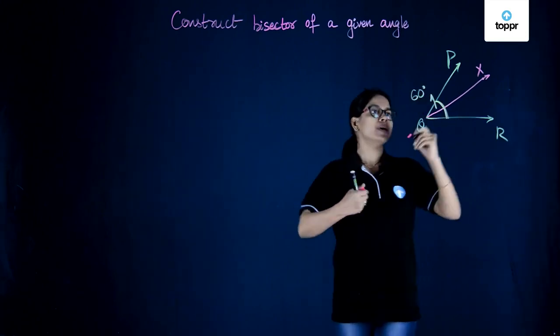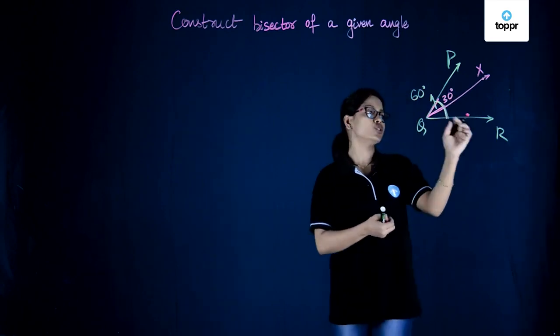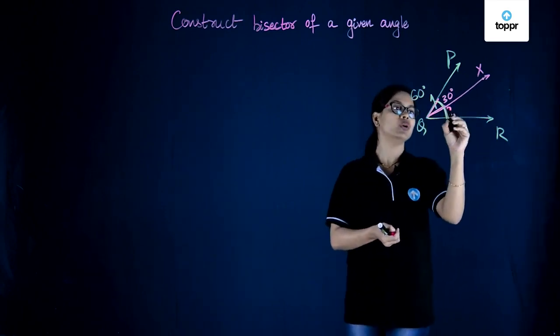on drawing the bisector the measure of angle PQX will be 30 degrees and the measure of angle RQX will be equal to 30 degrees.